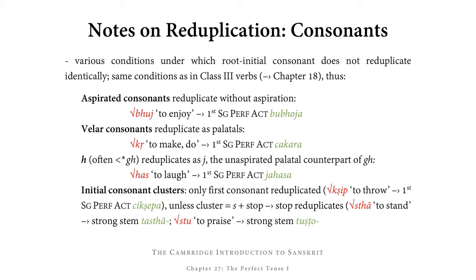Similarly, of stu 'to praise,' the strong stem in the perfect is tuṣṭo. In stu, the s is not reduplicated but the t is. The reduplicative syllable is t plus the zero grade vowel u, so tu. In the singular, where we have the strong stem, the root takes the guna sto. When we combine tu and sto, the s at the beginning of sto retroflects into ṣ because of the ruki rule, as it is preceded by u. As a result, the dental t also becomes retroflex, giving tuṣṭo as the strong stem of the perfect of stu.